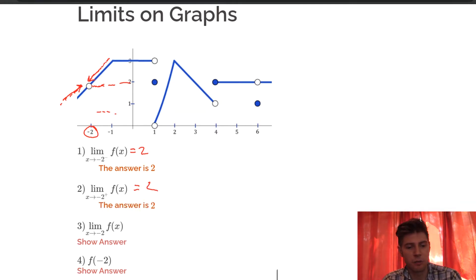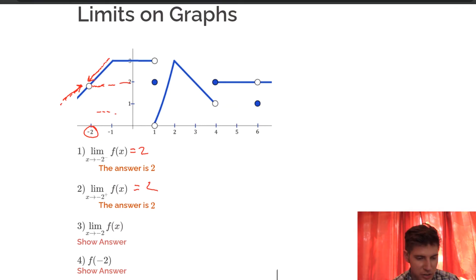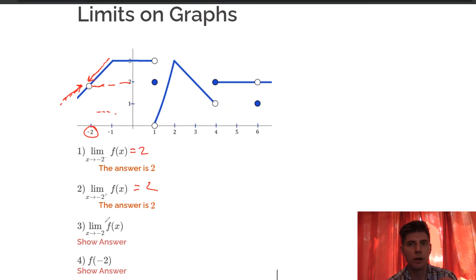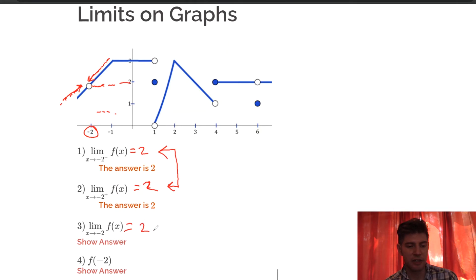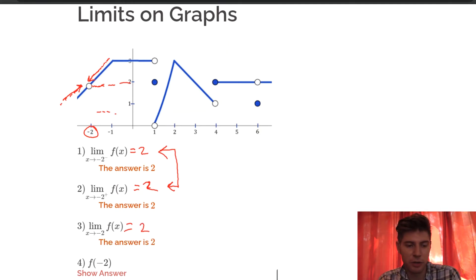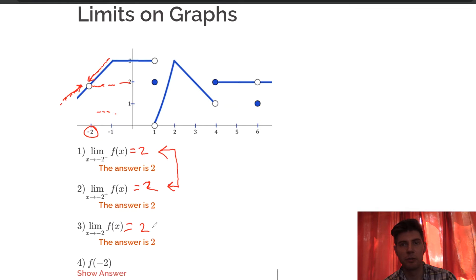Number 3 says what is the limit as x approaches negative 2 — there's no plus or minus, just negative 2. The two-sided limit will always exist if the left and right limits both exist and are the same number. Since they're both 2, the limit as x approaches negative 2 is 2. If one of them had been 3, for example, then the answer would be does not exist.